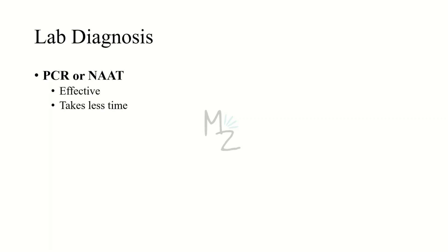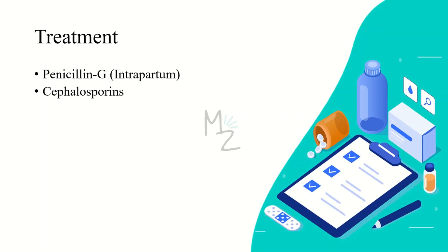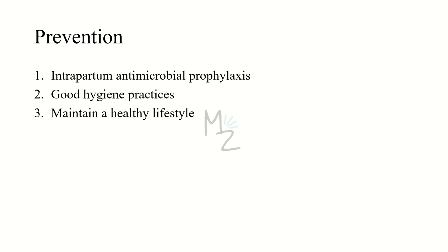Treatment: pregnant women are screened at 35 to 37 weeks, and if infection is detected, intrapartum penicillin G is given. Infections caused by streptococcus agalactiae are also treated with cephalosporins, clindamycin, cefazolin, and vancomycin. Intrapartum antimicrobial prophylaxis is really important to prevent infections caused by strep agalactiae. Practicing good hygiene and maintaining a healthy lifestyle can also help.